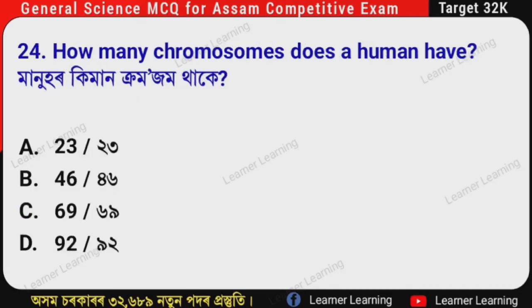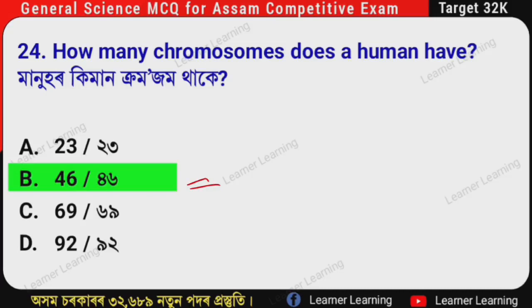Next question: How many chromosomes does a human have? (Assamese: Manohar kimaan chromosome tha ki?) The correct option is Option B — 46. A human has 46 chromosomes.